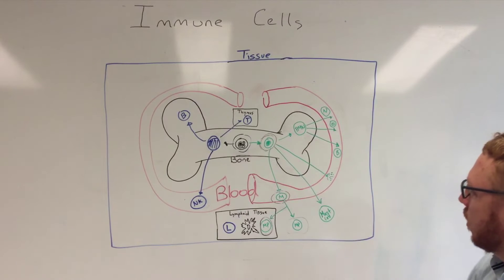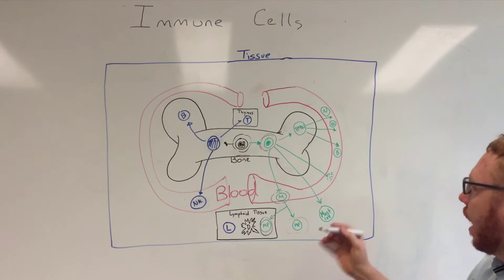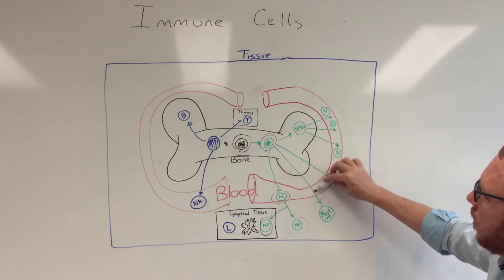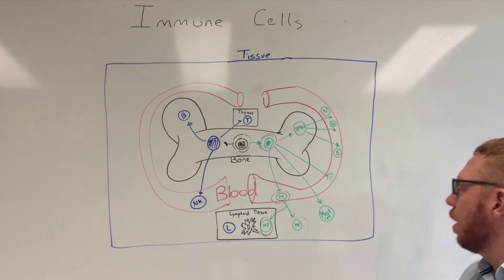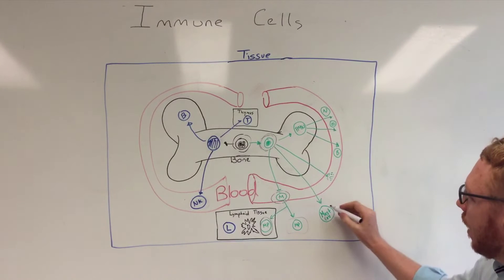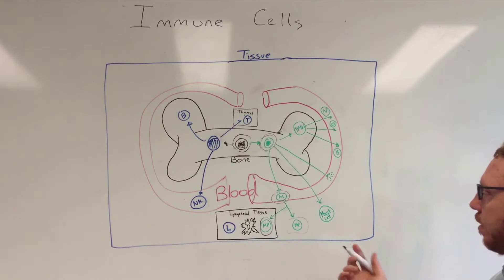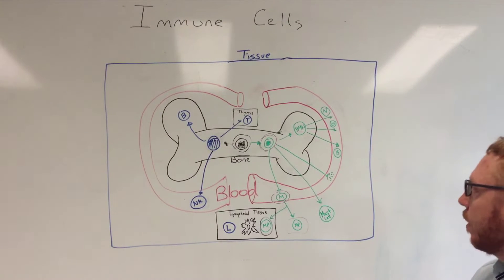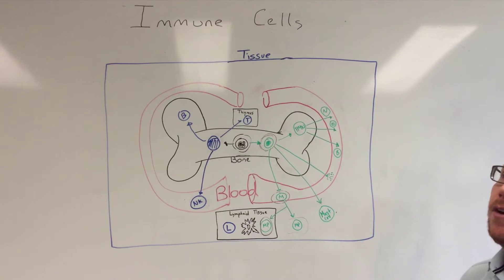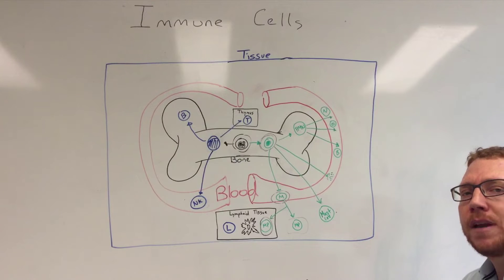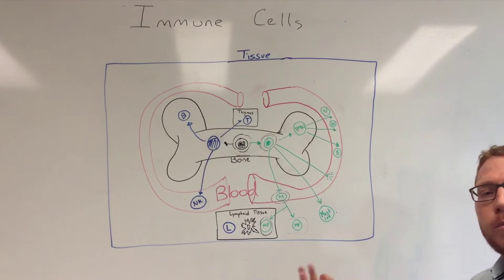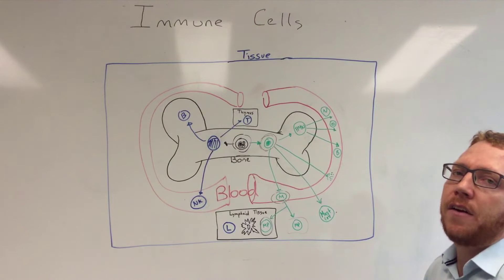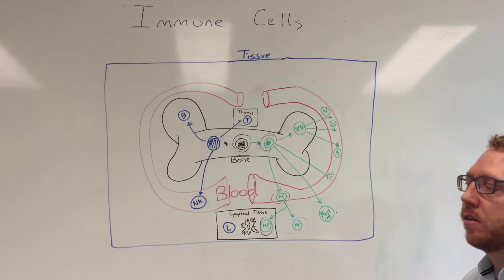Another lineage from the myeloid line is the mast cell. Mast cells are granulocytes — they have preformed granules in them. As immature precursors they migrate out of the bone into the blood and then into the tissue where they mature and ultimately differentiate. Their preformed granules are in most cases histamines and heparin, and they are very important for initiating and modulating the inflammatory response. Mast cells are located in connective tissue just under your skin, around blood vessels, and in mucosa such as your gut or bronchioles. When mast cells degranulate they cause inflammation in that area, such as hay fever, vasculitis, or dermatitis.